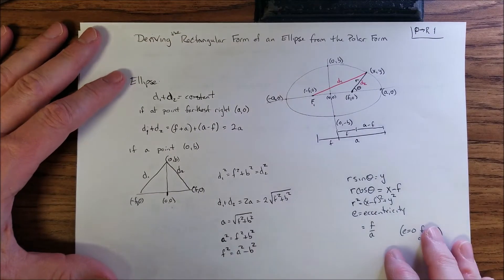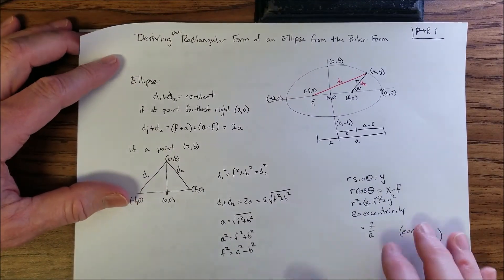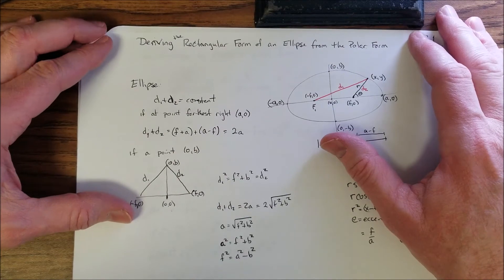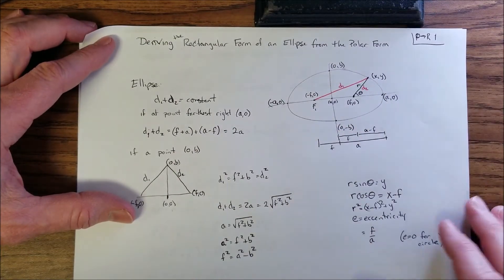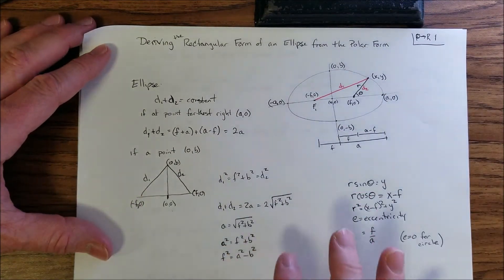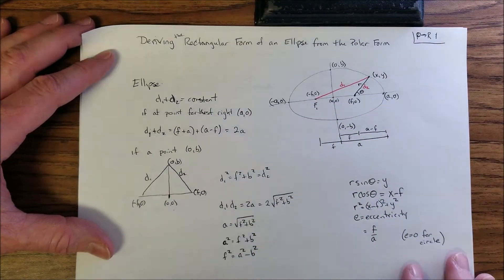There's another video where I derive the polar form of an ellipse from the rectangular form, and just for the fun of it, let's see if we can go in reverse. Personally, I find this a little bit more intuitive than the other one, but you be the judge — whatever works for you.